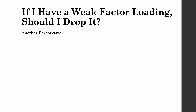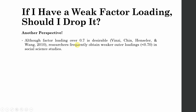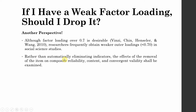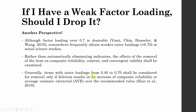There is another perspective as well. Although factor loadings over 0.70 are desirable, researchers frequently obtain weaker outer loadings in social sciences studies. Rather than automatically eliminating indicators, the effects of the removal of an item on composite reliability, content validity, and convergent validity shall be examined. Items with outer loadings from 0.40 to 0.70 shall be considered for removal only if the deletion will increase the composite reliability and AVE over the recommended value.